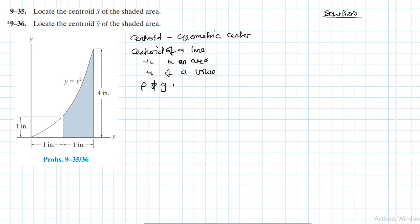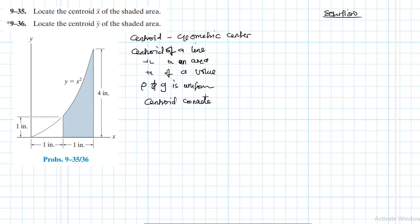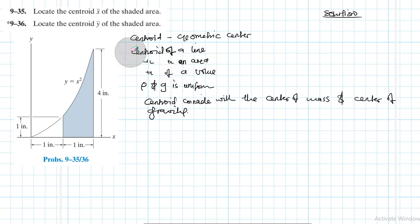When density and acceleration due to gravity are uniform, you expect the centroid to also coincide with the center of mass and center of gravity. With that said, let's dive into the problem.